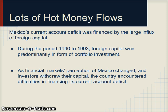At the same time, that current account deficit was financed by a lot of hot money inflows. There are two ways to finance a current account deficit: either foreign direct investment into manufacturing facilities and long-term investment, or short-term hot money flows which can come in and out very quickly. Mexico had the hot money flows, which made it more vulnerable to a crisis. During 1990 to 1993, foreign capital was predominantly in the form of portfolio investments. As financial markets' perception of Mexico changed and investors became more worried, they started taking their money out, causing the financial account to also turn to deficit.